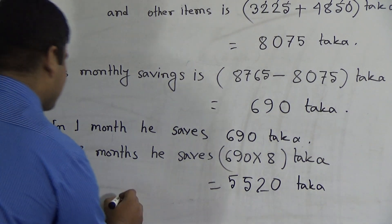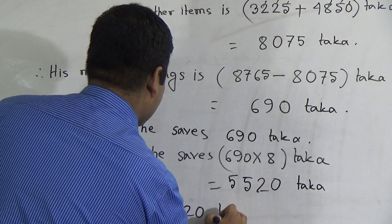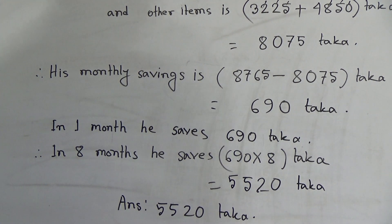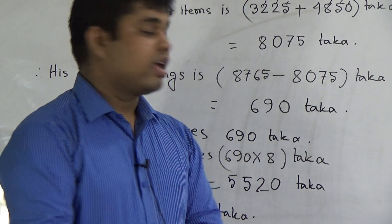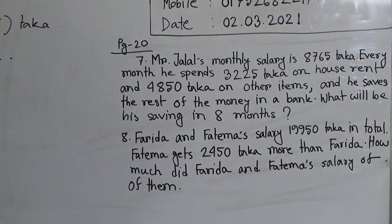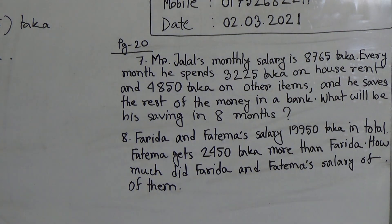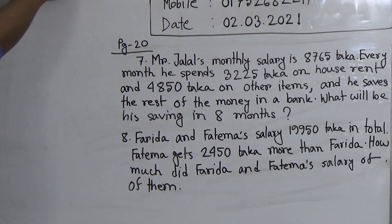We write this as the answer. This is the solution of question number 7. I hope you have understood. Please do this math in your CW copy — if you do, it will be easier for you to understand. Next, we shall solve question number 8. In order to solve question number 8, we erase question number 7.